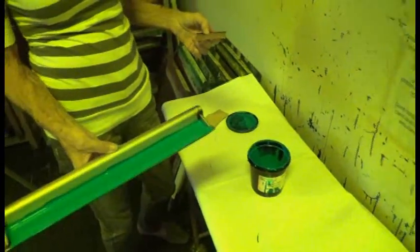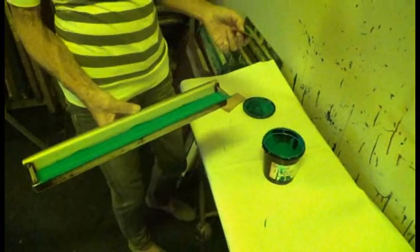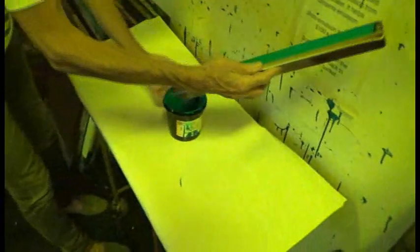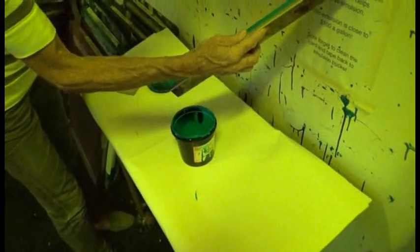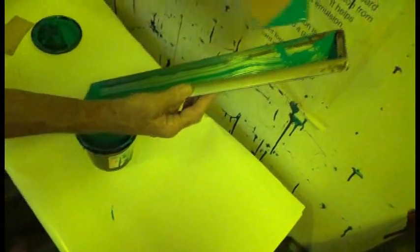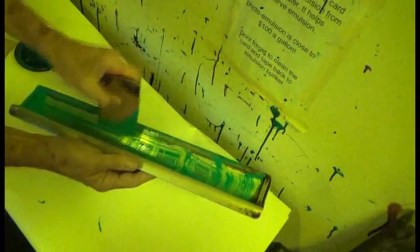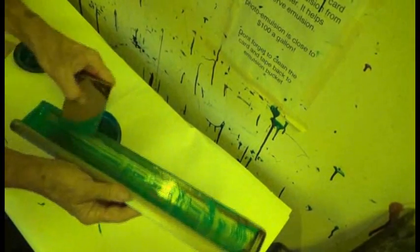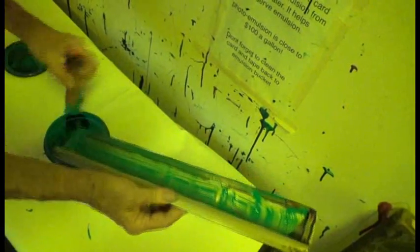Once we're done coating the screen, we still have emulsion in the trough. It's perfectly good, so anything that's left can be returned to the container and used in the future to coat another screen. We save old cardboard and cut it into little squares that make it easy to scrape out as much as we can from the scoop coater.